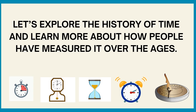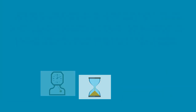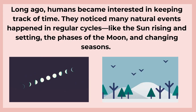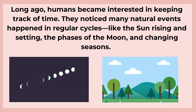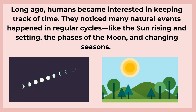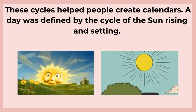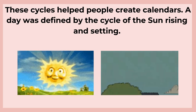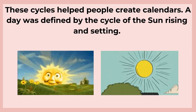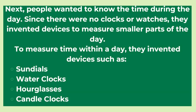Now, we will explore the history of time and learn more about how people have measured it over the ages. Long ago, humans became interested in keeping track of time. They noticed many natural events happened in regular cycles, like the sun rising and setting, the phases of the moon, and changing seasons. These cycles helped people to create calendars. A day was defined by the cycle of the sun rising and setting. People also wanted to know the time during the day, and since there were no clocks or watches, they invented devices to measure smaller parts of the day.